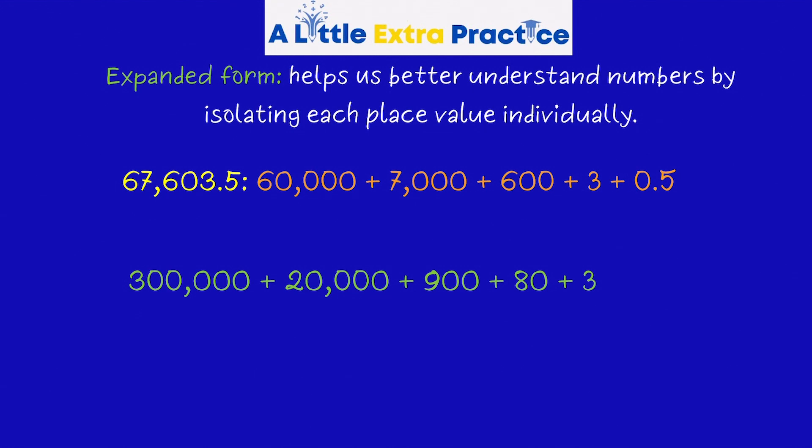As we look at 67,603 and 5 tenths, you can see as we break down by place value, 6 in the 10,000s would be 60,000. It's not a 7, it's actually a 7 in the 1,000s for 7,000, plus 6 in the 100s, plus 3 in the 1s, plus 5 in the 10ths.